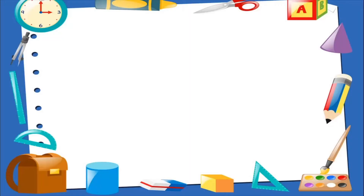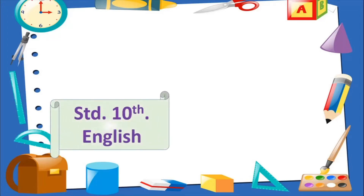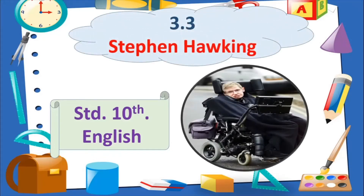So let us do a lesson in English today. Children, let us start with another lesson in English which will be of Standard 10th. This is not a new lesson — this is a lesson that we have been doing last time, that is Lesson number 3.3: Stephen Hawking. In this particular lesson we are going to talk about the second part of the lesson in your textbook, so this will be Part 2.